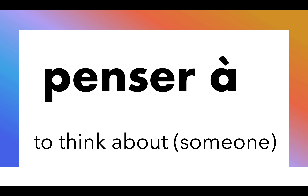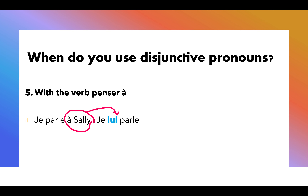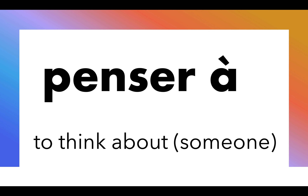So finally, with the verb penser à. Penser à means to think about somebody. For some reason — I don't have an explanation, and no textbook does either — we cannot use an indirect object pronoun with penser à. Consider this sentence: je parle à Sally. The verb there is parler à, not penser à. You can replace Sally and à with an indirect object pronoun and say je lui parle — I talked to her. But we cannot do that with the verb penser à. It's the only verb you have to learn right now that works that way.